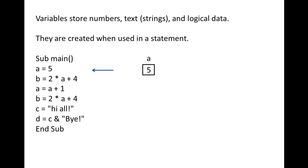Variables may be used to calculate the value of other variables. The second statement is b equals 2 times a plus 4. The variable b is created and will be assigned the value on the right side of the equal sign. Just as in the Excel workbook environment, the order of operations is followed. 2 times the current value of a, which is 5, gives 10, and this is added to 4. The resulting value, 14, is assigned to b.